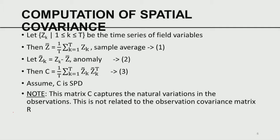Computation of the spatial covariance: C is the spatial covariance among m observation stations. Z_k is the time series of the field variable, and z-bar is the vector of means — the average of capital T number of observations. Z-tilde_k is the vector of anomalies. If the vector of anomaly is known, I can compute the covariance matrix as the sum of z-tilde times z-tilde transpose over k, divided by T. This C is symmetric positive definite — the covariance is always symmetric, and if the number of data is large, C will indeed be symmetric positive definite.